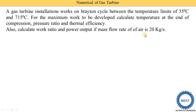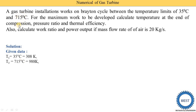Now we write down the given data. T1 = 35°C, which is 35 + 273 = 308 Kelvin. T3 = 715°C, which is 715 + 273 = 988 Kelvin. The mass flow rate of air is 20 kg per second.